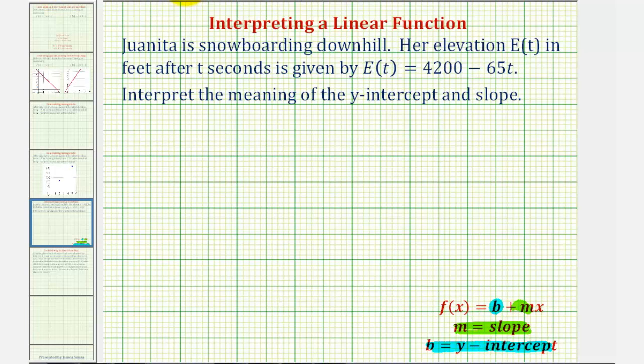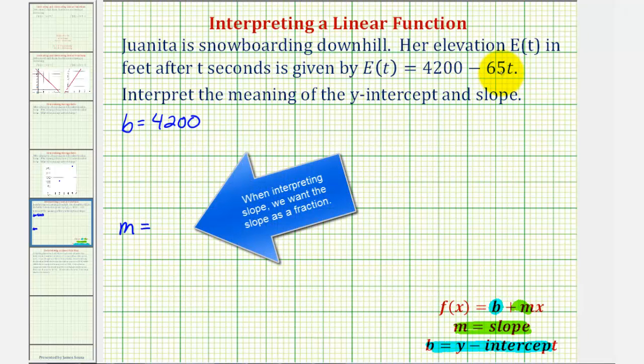So looking at our linear function, notice that the y-intercept, or b, is 4,200 and m, or the slope, is equal to negative 65. Let's write this in fraction form as negative 65 over one.